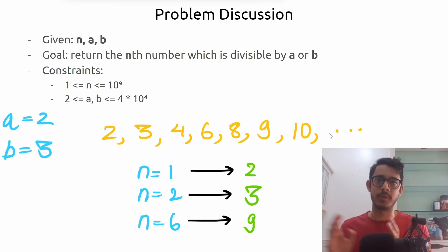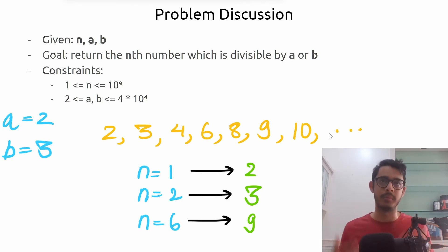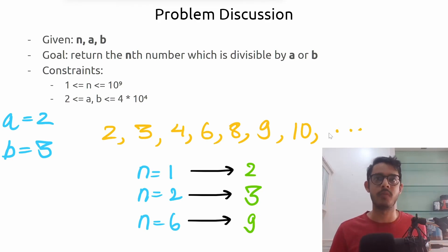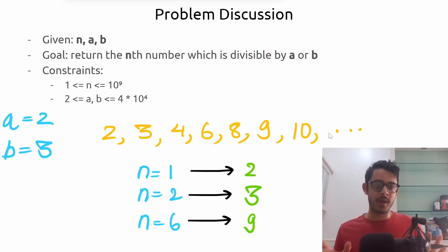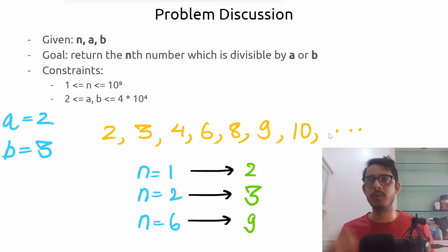We can have multiples of 2 as in 2, 4, 6, 8, 10; multiples of 3 as in 3, 6, 9; and also their common multiples as well — so 6, 12, 18, and so on. Now the question is: given a=2 and b=3, can you find the answer for n equals 1?